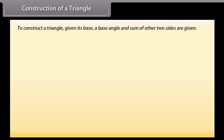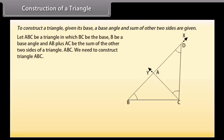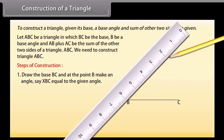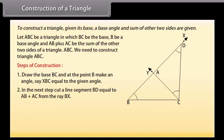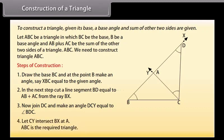Construction of a Triangle — given its base, a base angle and the sum of the other two sides. Let ABC be a triangle in which BC is the base, B is a base angle, and AB plus AC is the sum of the other two sides. We need to construct triangle ABC. Steps of construction: Draw the base BC and at point B make an angle XBC equal to the given angle. Cut a line segment BD equal to AB plus AC from ray BX. Now, join DC and make an angle DCY equal to angle BDC. Let CY intersect BX at A. Then, ABC is the required triangle.